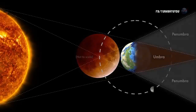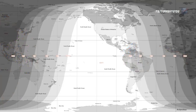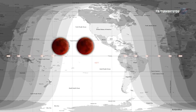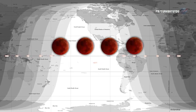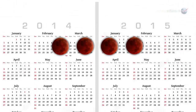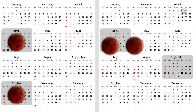The action starts on April 15, when the full moon passes through the amber shadow of Earth, producing a midnight eclipse visible across North America. That night marks the beginning of a lunar eclipse tetrad, a series of four consecutive total eclipses occurring at six-month intervals.